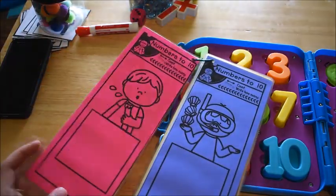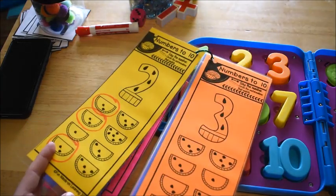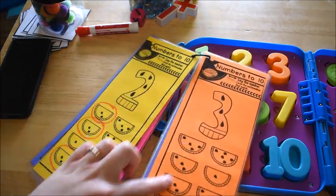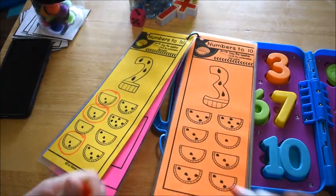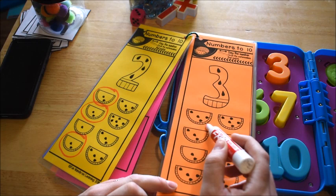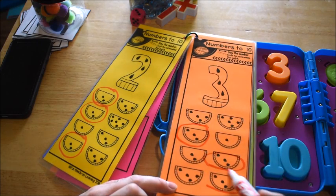This section gives them a number and then they have to find the watermelons that have the three on them and circle or mark them. So like this one has three, and this one has three, and this one has three.